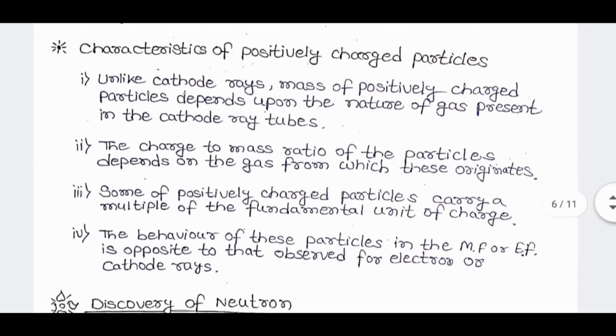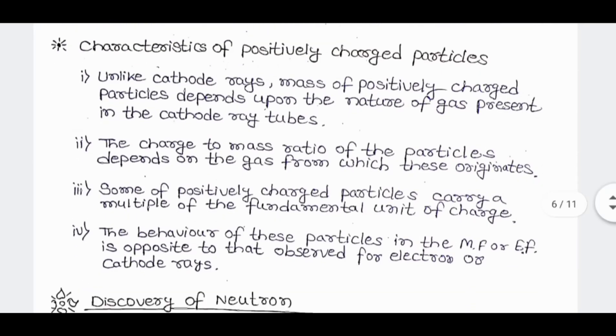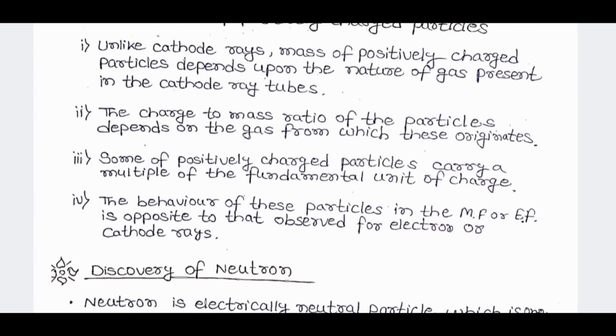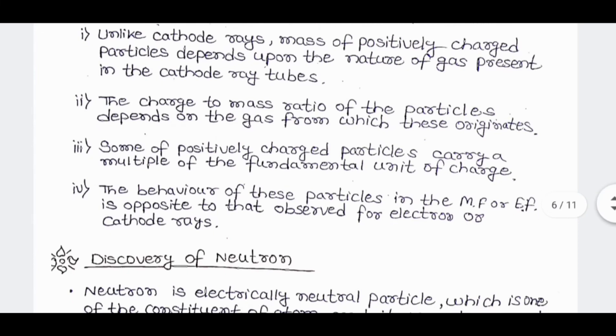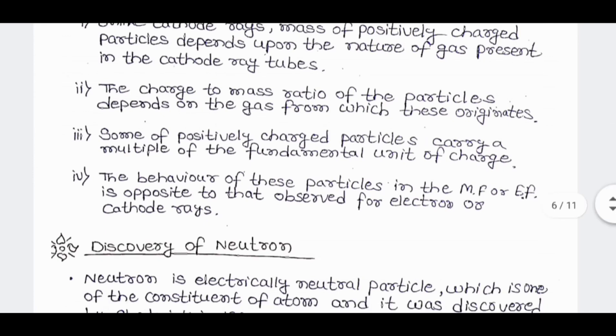Characteristics of positively charged particles: Unlike cathode rays, mass of positively charged particles depends upon the nature of gas present in the cathode ray tubes. The charge to mass ratio of the particles depends upon the gas from which these originate. Some of the positively charged particles carry a multiple of the fundamental unit of charge. The behavior of these particles in the magnetic or electric field is opposite to that observed for electron or cathode rays.